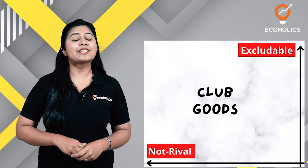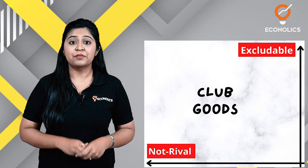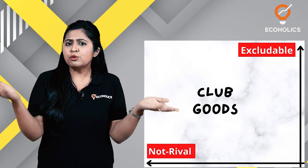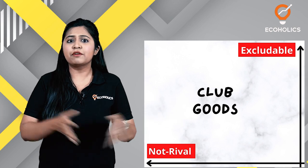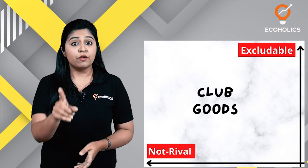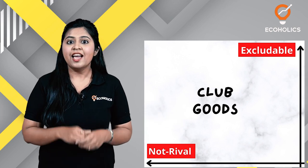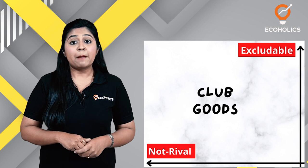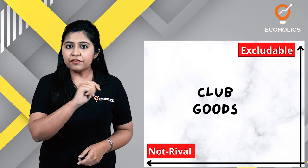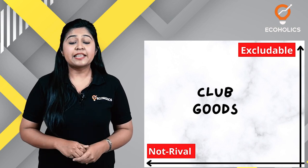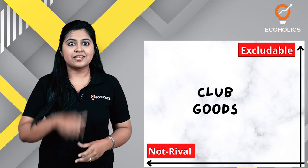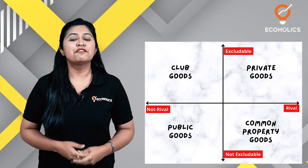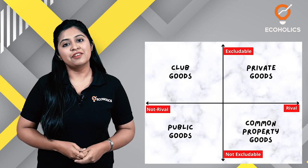Last is Type 4 goods at the upper left corner, which represents club goods. These are low on rivalry but high on excludability. For example, productive ideas can be used by any number of individuals without reducing their quantity — they are non-rival — but ideas can also be confidential and kept secret, so they are highly excludable. These are the four types of goods.